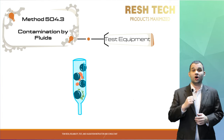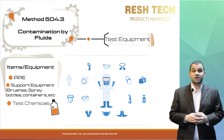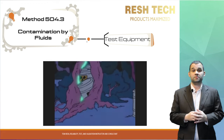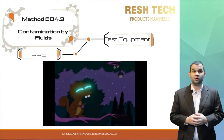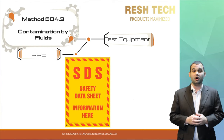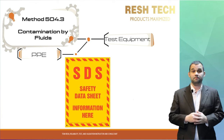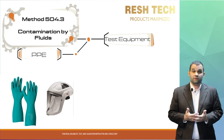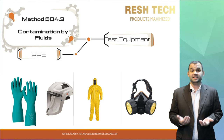The test equipment is not extensive for this test compared to all of the other tests covered in MIL-STD-810H. Mainly the items required are PPE, support supplies, and the chemicals themselves. You should review all of the chemicals you plan to use for testing and determine the appropriate personal protection equipment needed. As a guideline, you should have or procure chemical gloves, face shields, and even chemical suits and respirators, depending on the types of chemicals you are using and the size and ventilation of your testing location.